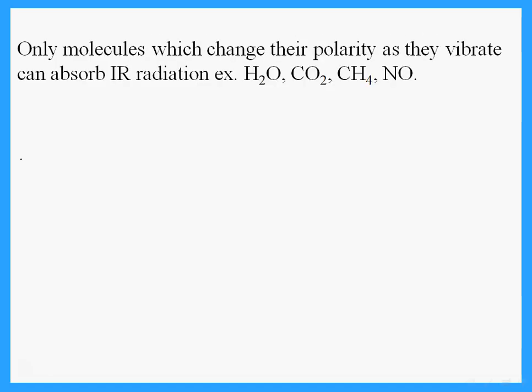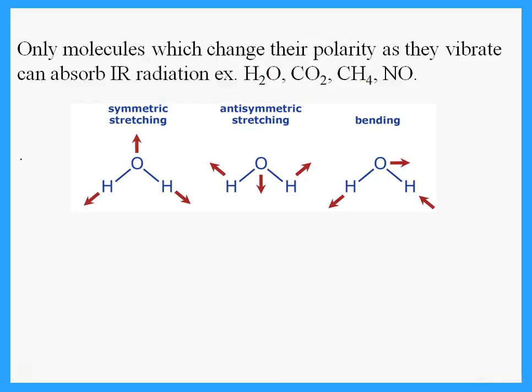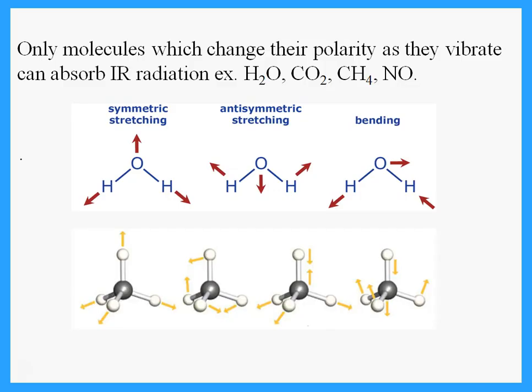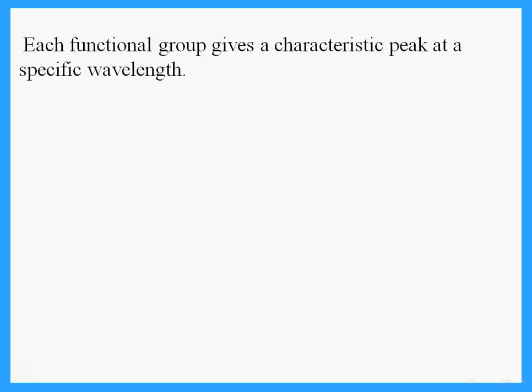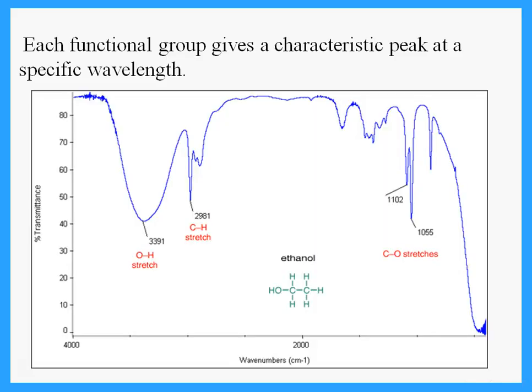Only molecules which can change their polarity as they vibrate can absorb IR radiation. Molecules such as water, CO₂, and methane can absorb IR radiation, but molecules such as oxygen and nitrogen do not absorb IR radiation. Each functional group in a molecule gives a characteristic peak at a specific wavelength.